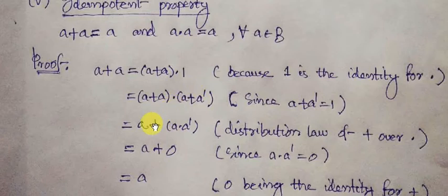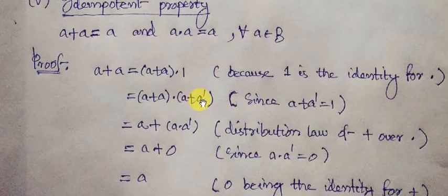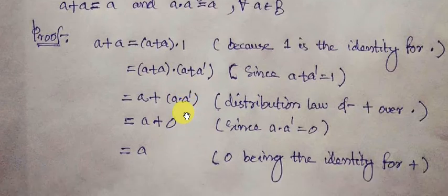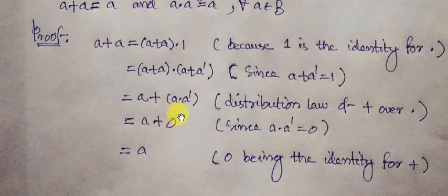For this, we use the distributive property of addition over multiplication. The distributive property gives us: A plus A into A plus A-complement equals A plus A, times A plus A-complement. So for this line we have written A plus A into A-complement. Also, from the complement property, we know A into A-complement equals 0. So in place of A into A-complement, we write 0.